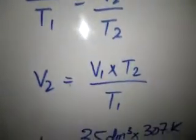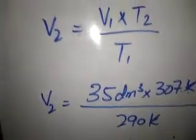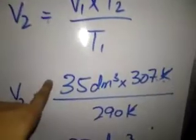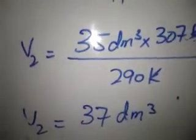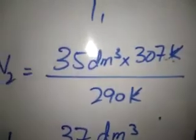V2 equals V1 times T2 over T1. We will put in the values: 35 times 307 Kelvin divided by 290 Kelvin. Kelvin will be crossed and then we will calculate.